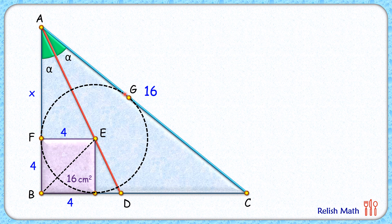How about GC? GC will be 16 minus x. Now again from point C we have two tangents drawn, and thus this length from C to this point will be 16 minus x.